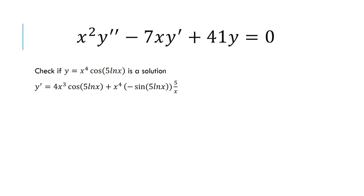For the power rule, take the derivative of x to the 4th first, which is 4x cubed times a cosine. Plus, leave x to the 4th alone and take the derivative of cosine 5 ln of x.